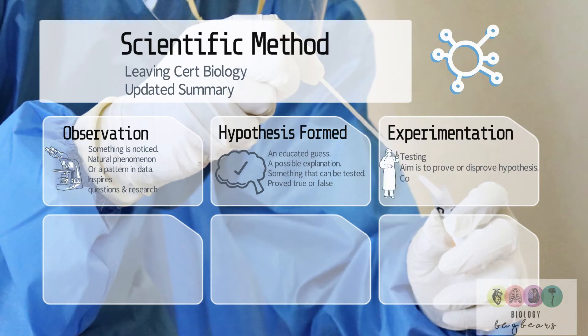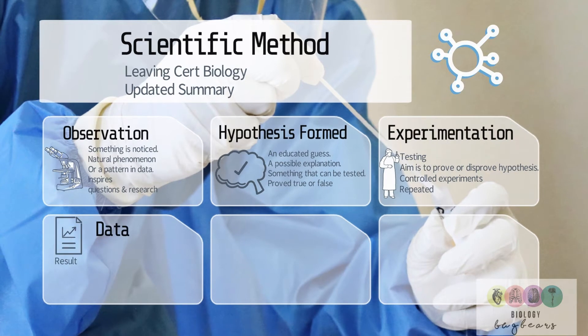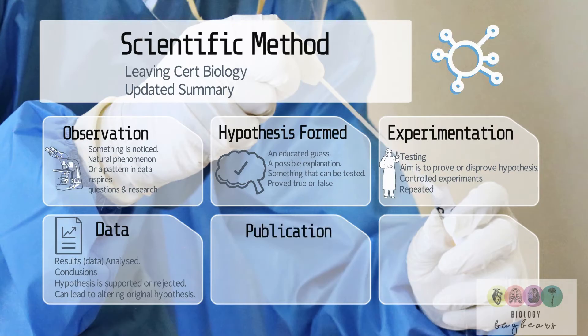Experimentation follows. This is using controlled, repeated experiments to either prove or disprove the hypothesis. Data is collected and analysed as a result of all of these experiments. Conclusions are drawn and the hypothesis is either supported, rejected, or perhaps altered.